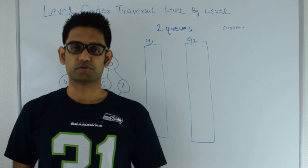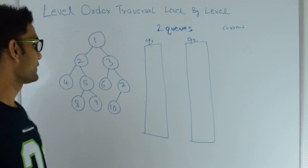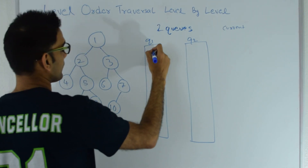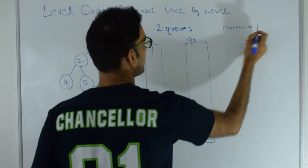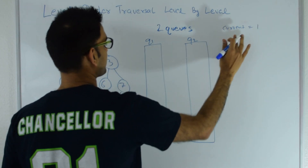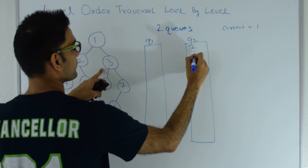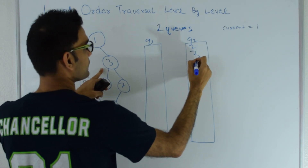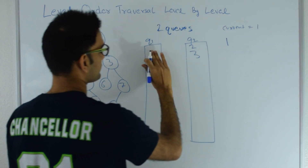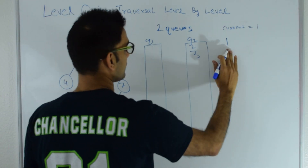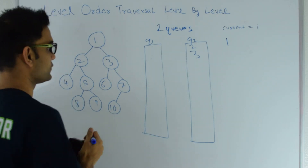My first technique is using two queues. Let's see how this works. I have two queues, q1 and q2. I put my root in q1, then I pop it out from q1 and make that the current. If current has a left child I put that in q2. If current has a right child I put that in q2, and now since q1 is empty I print 1. Since q1 is empty I print a new line and go to the next line.